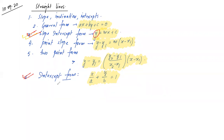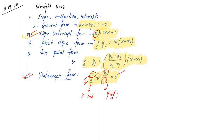In intercept form, whatever is below x is called the x-intercept and whatever is below y is called the y-intercept. To identify intercepts easily: only x appears above, only y appears above, plus sign between them, any extra coefficient goes to the denominator, and most importantly the right-hand side must equal 1. Similarly for slope-intercept form, the left-hand side must have only y — coefficient of y must be 1 — and everything else goes to the right-hand side.